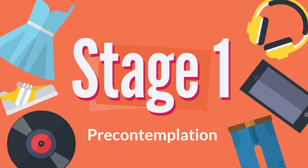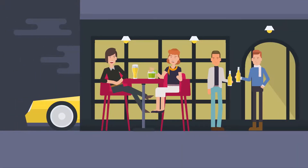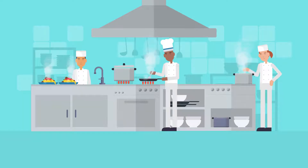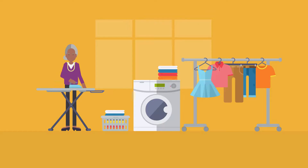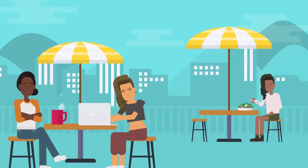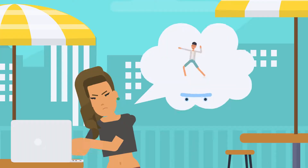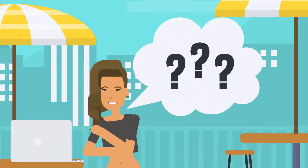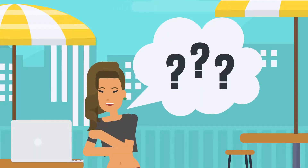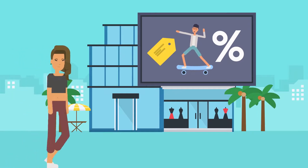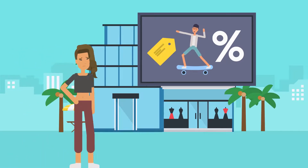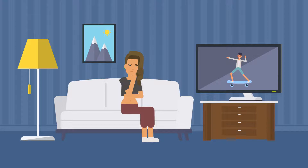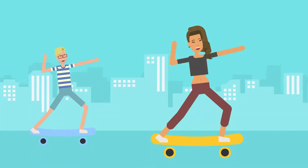Stage 1: Pre-contemplation. This is where your potential customers don't know your product exists or don't realize that they need it. At this point, their reaction might be something like, 'A phone case skateboard? Why would I ever need that?' To move on to stage 2, you have to somehow get on their radar or show them that they might potentially, someday, need your product.